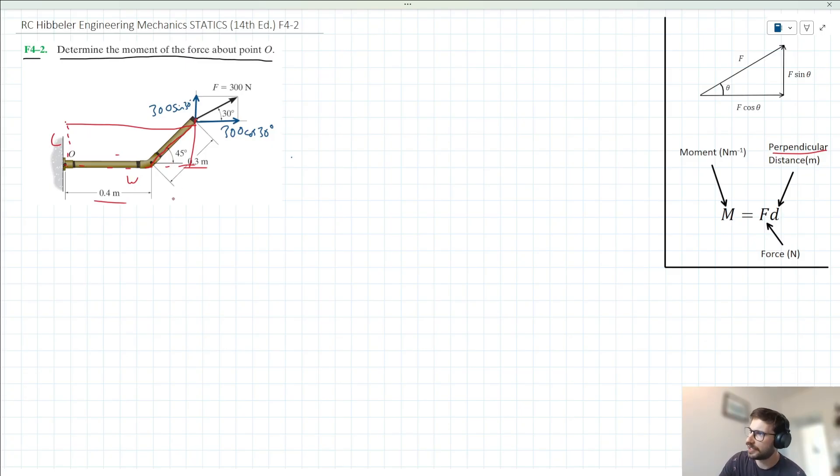So evidently, we're going to want, let's just remove some of these lines here, in order to determine our perpendicular distances, which we'll need to take moments about point O with. We'll want this length, which we can then add to 0.4, and we're going to want this length, which we can take as the perpendicular distance between point O and the horizontal component here. So evidently,